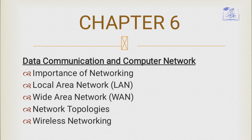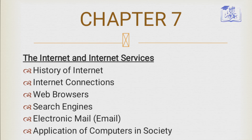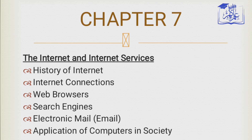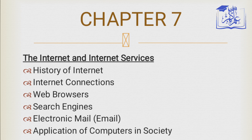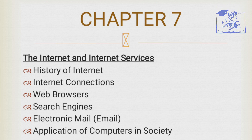The internet and internet services is chapter number seven. It includes the history of the internet, internet connections, web browsers, search engines, electronic mails, and application of computers in society.